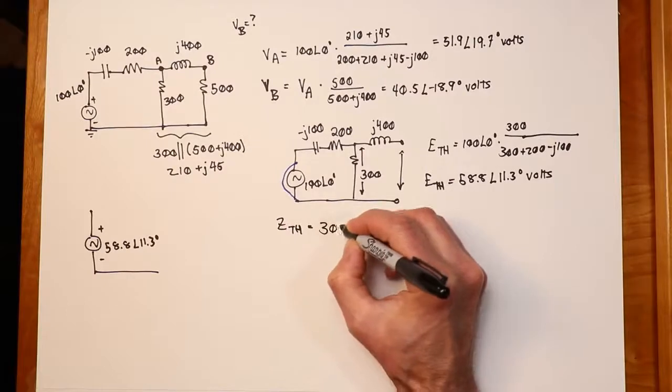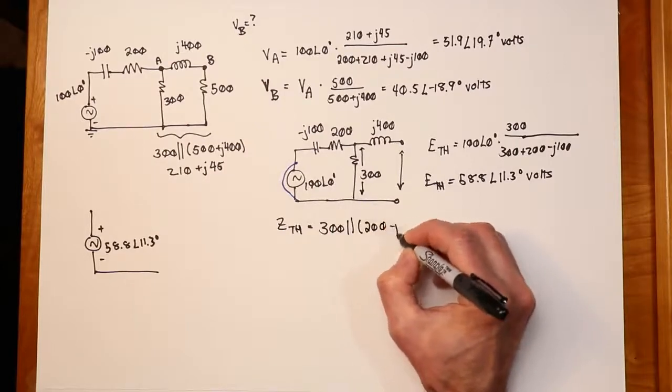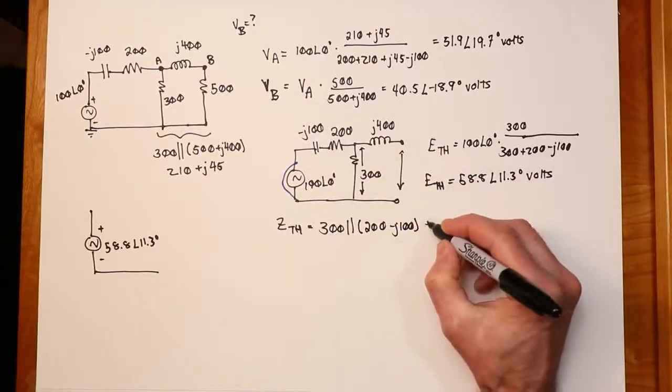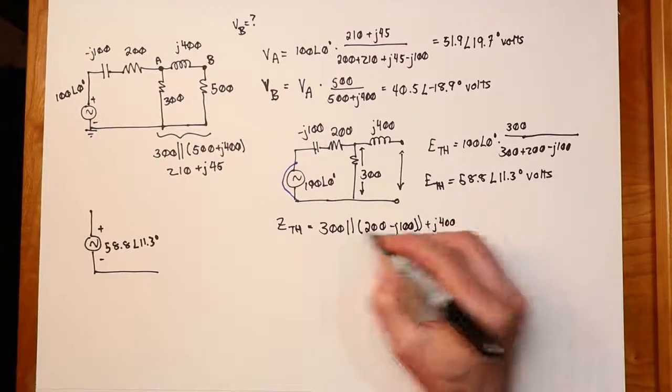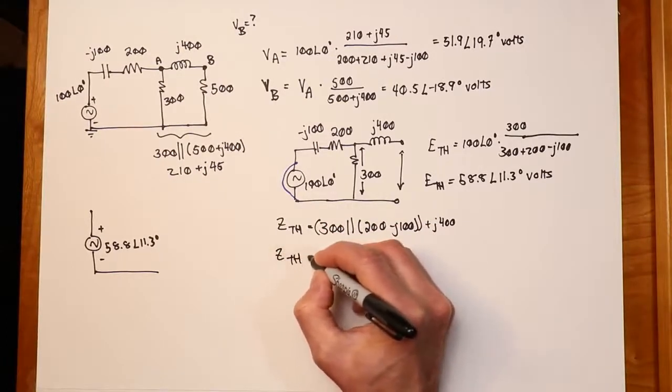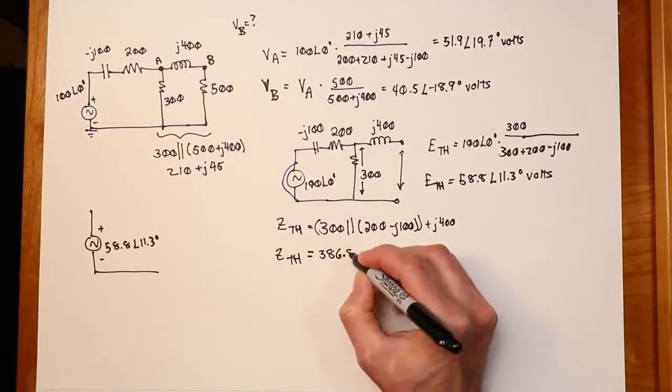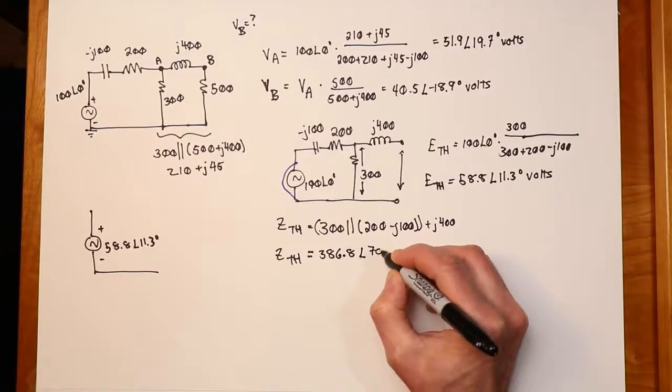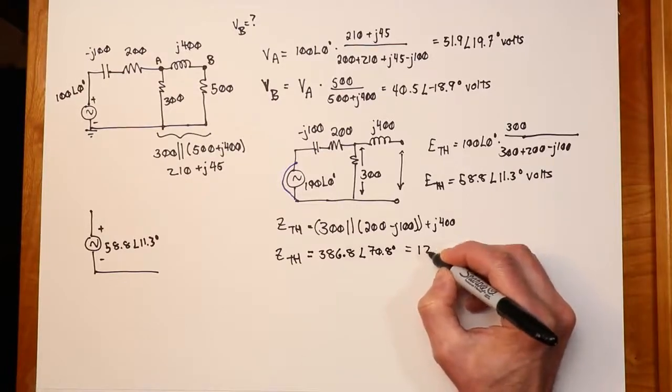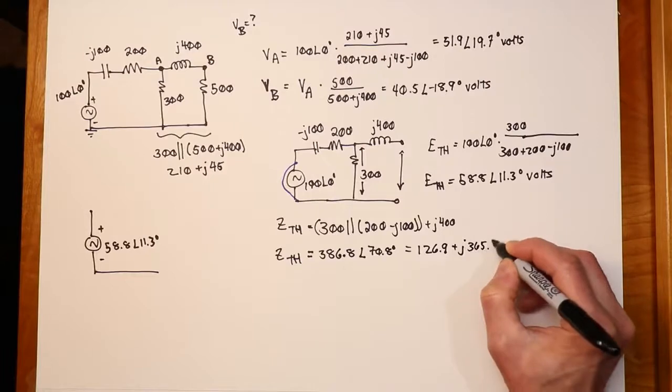So we find for Z Thevenin, 300 in parallel with this combo, 200 -j100, and then this is in series with the j400. I want to be really explicit about it. We'll put some extra parentheses in here. So when we grind this out, Z Thevenin will work out to 386.8 at an angle of 70.8 degrees. In rectangular form, this is equal to 126.9 + j365.4.